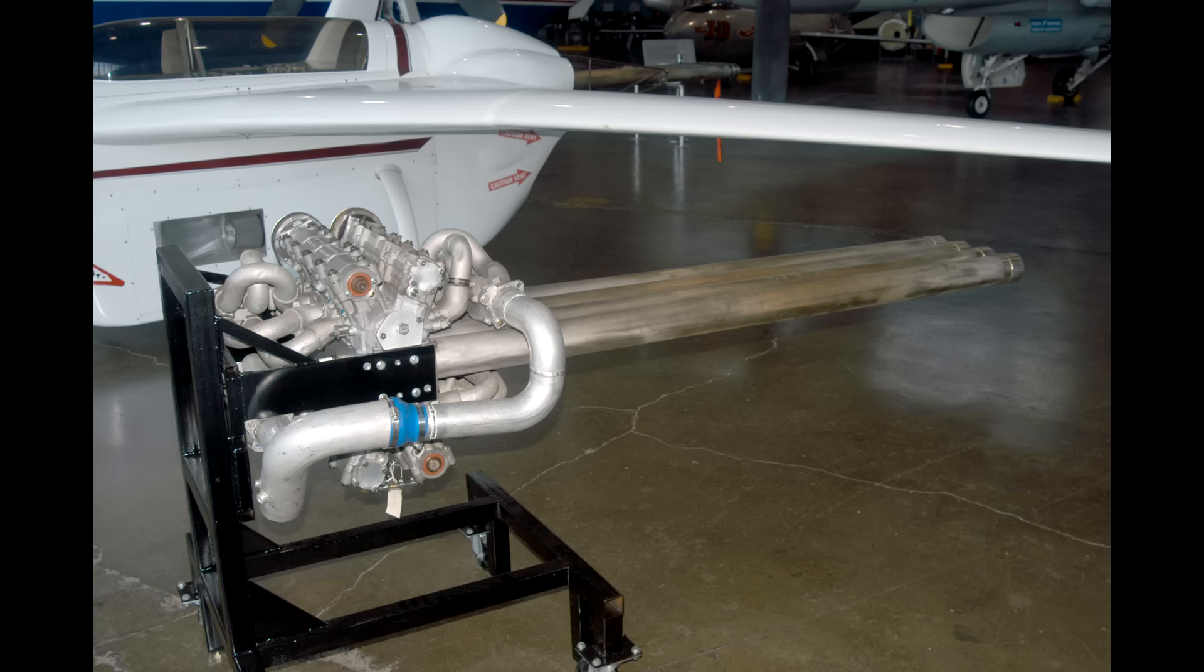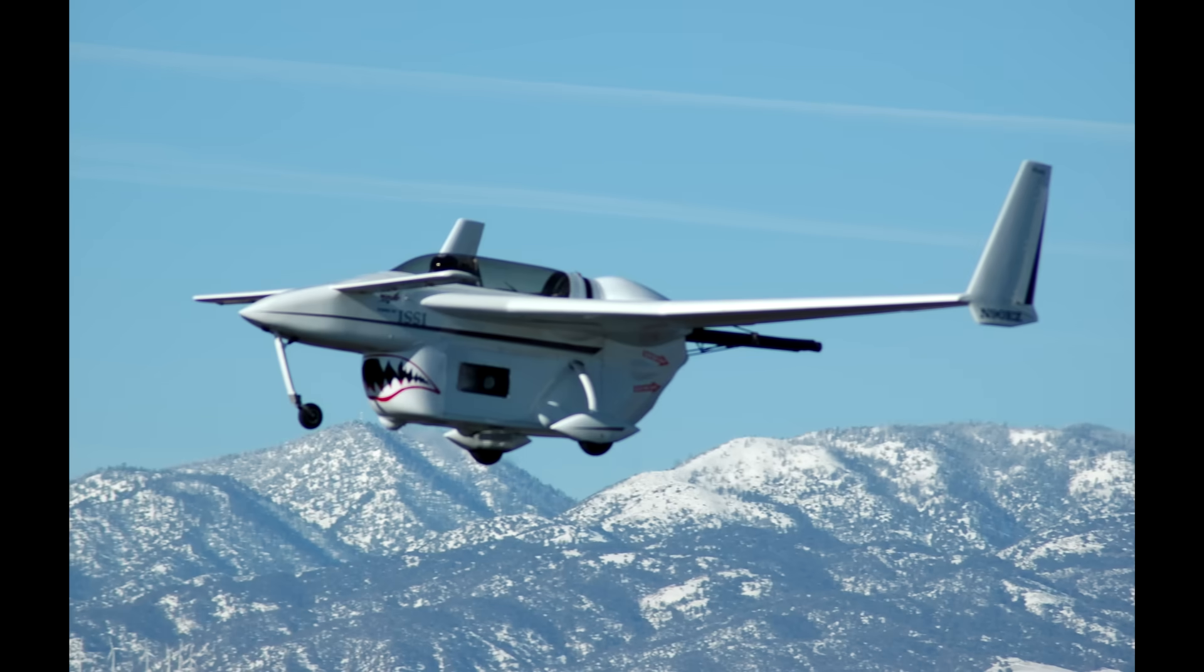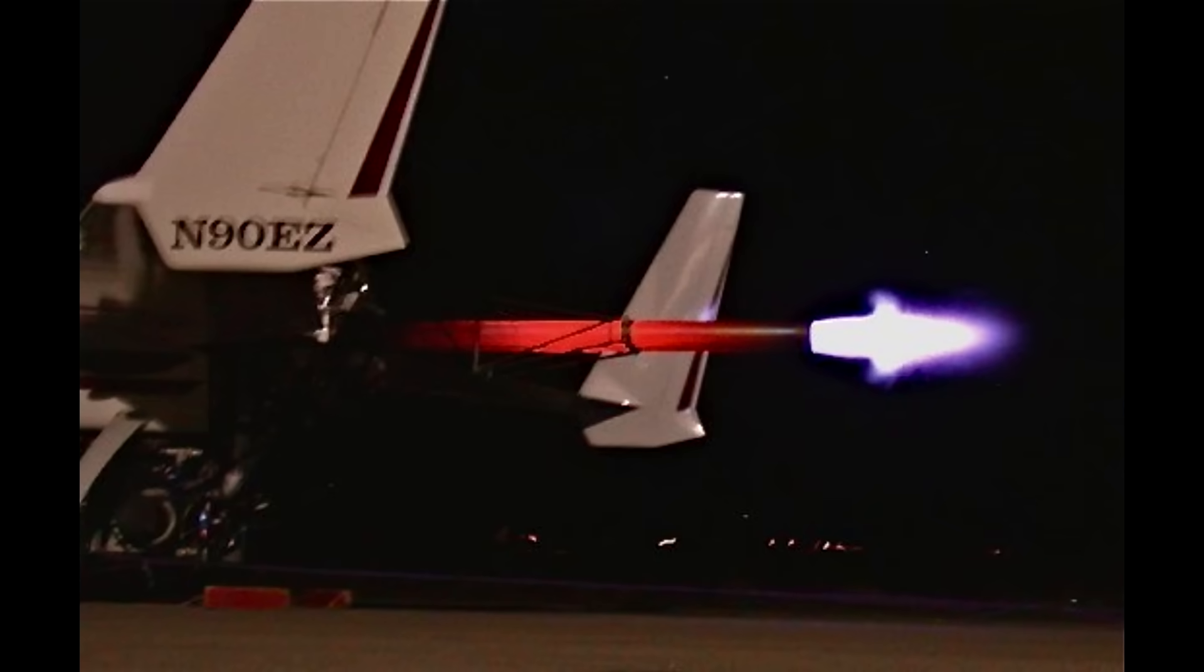So the engines in that test vehicle would pulse 20 times per second and there were four of them. So they had like an 80 hertz pulsing. And at this point, I should also mention that there are other pulse jets. The V-1 missile was powered by a pulsed engine, but it used mechanical slats and it wasn't a detonation.